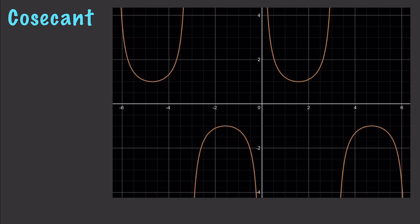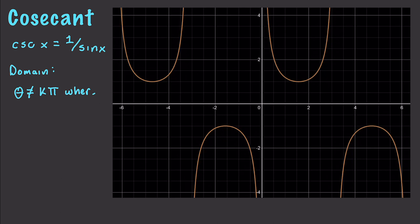Finally, that leaves us with cosecant, abbreviated as csc, which equals 1 over sine of x. Anywhere sine is 0, you will have an undefined value. The domain is all real numbers such that the angle is not equal to k times pi, where k is an integer. So there is a rundown, as well as graphs, of the six major trigonometry functions and how manipulating them affects their graphs. Hopefully you found that useful. Please leave your questions and comments down below — till next time.